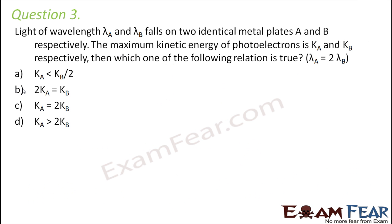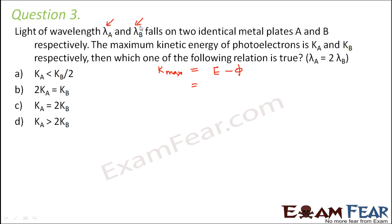Question number 3: light of wavelengths λa and λb falls on two identical metal plates A and B respectively. The maximum kinetic energy of photoelectrons is Ka and Kb respectively. Which relation is true? Using the photoelectric equation, KE_max = hc/λ − φ for each plate.